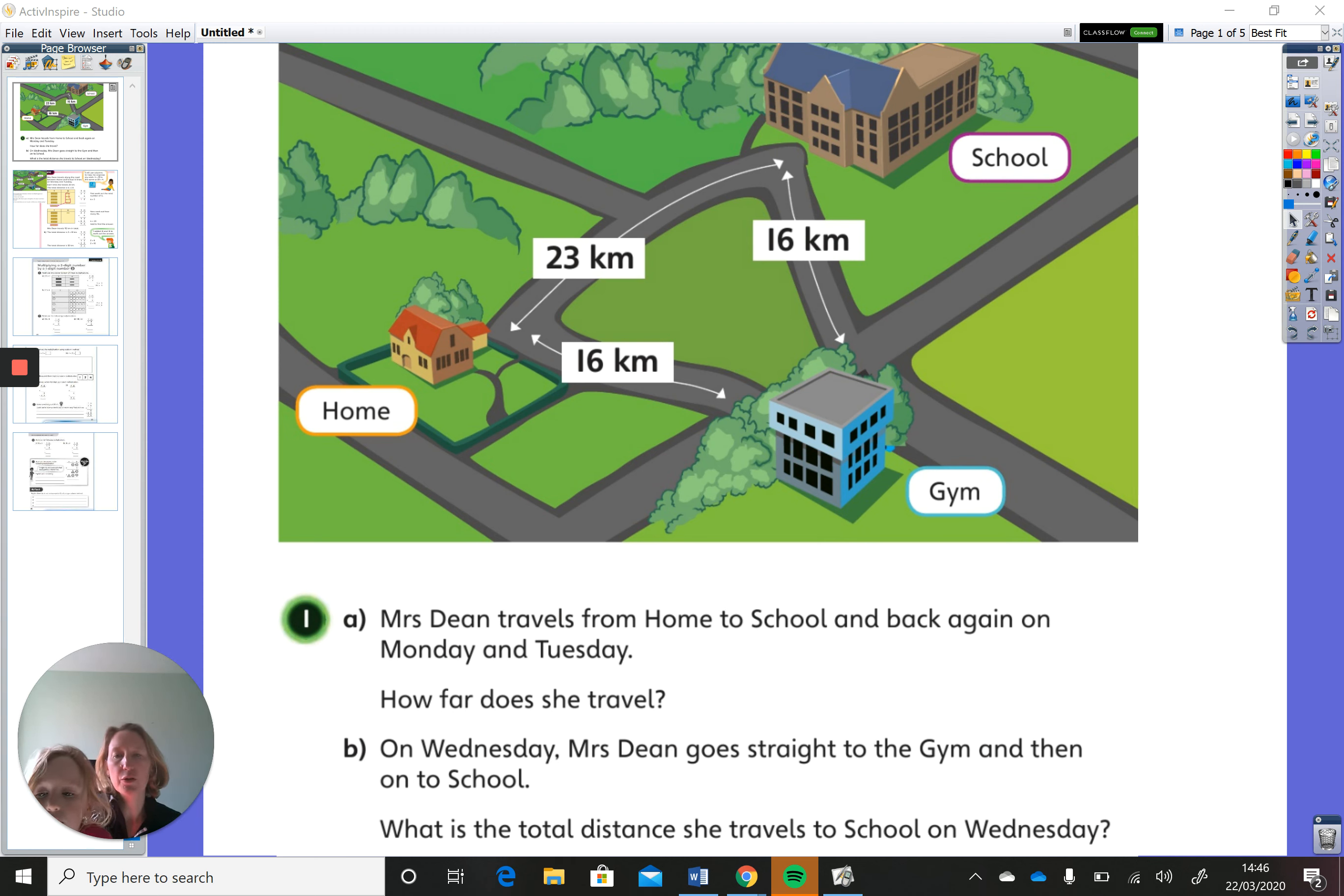Right, and so my question to you this morning Willow class is: Mrs. Dean travels from home to school and back again on Monday and Tuesday. How far does she travel? And then B, on Wednesday Mrs. Dean goes straight to the gym and then on to school. What is the distance she travels to school on Wednesday? It's probably worth at this point pausing me and grabbing a piece of paper to see if you can work out the answers.